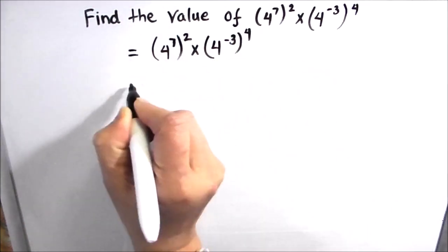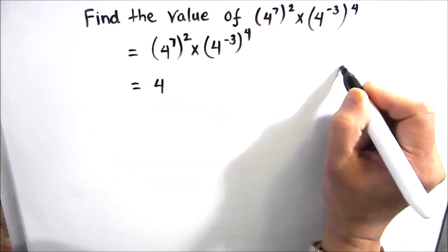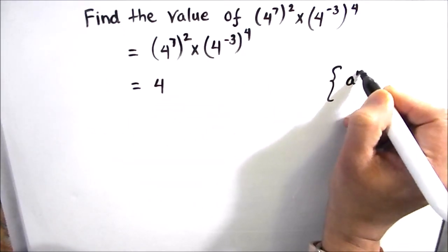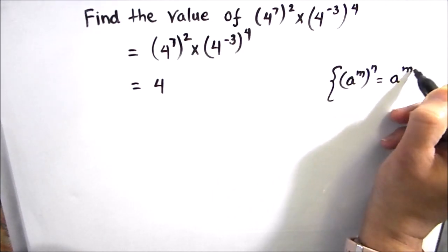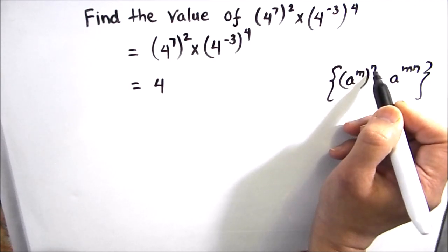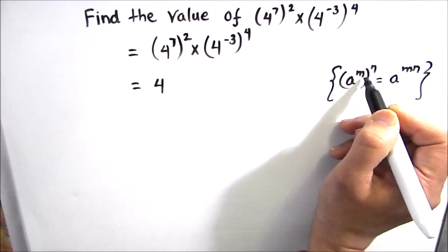We need to find the value of this expression. First, we are going to make use of the exponential law (a^m)^n = a^(mn). It says that the index at the outside of the parenthesis gets multiplied with the index in the parenthesis.